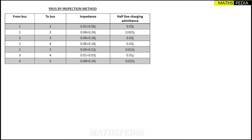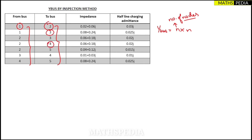The Y-bus matrix is an n×n matrix where n is the number of nodes. To find n, look at both columns — from-bus and to-bus — and identify all numbers involved. Here the numbers are 1, 2, 3, 4, and 5, so there are five nodes and five buses.